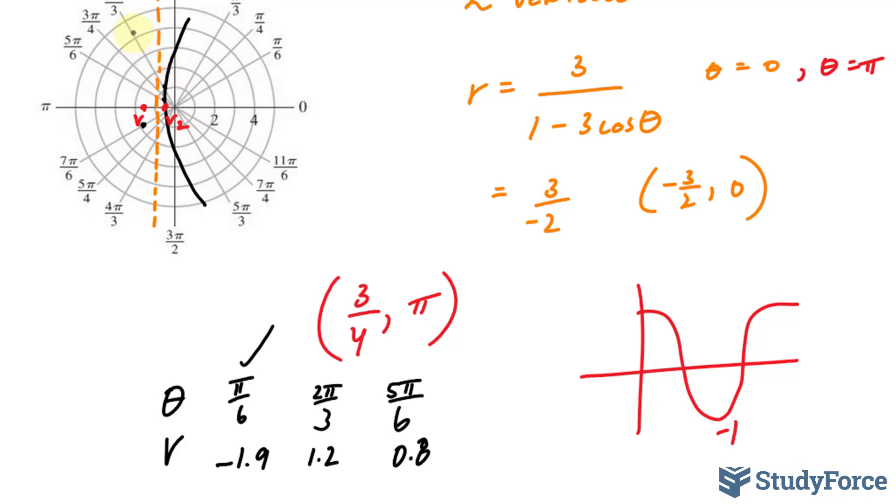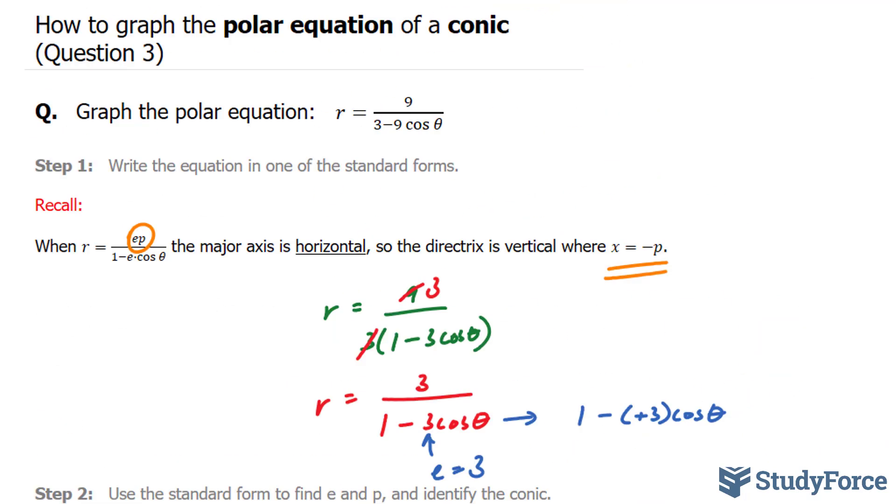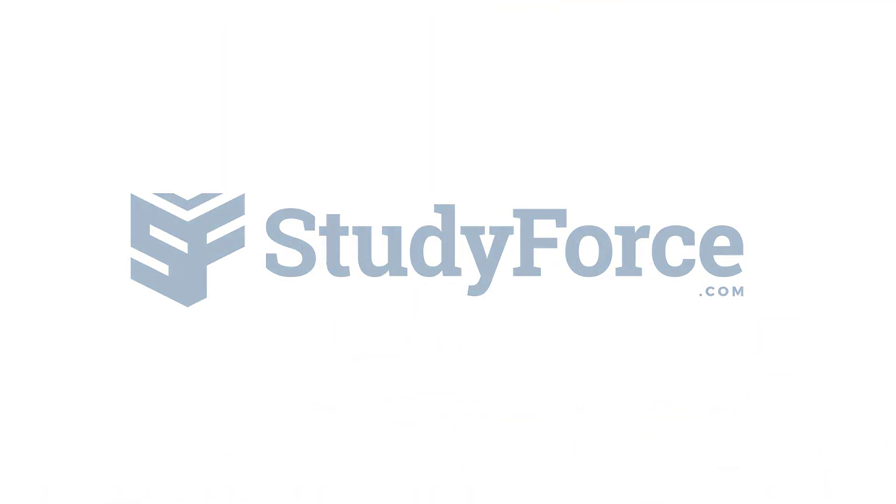And you can do your best to make it symmetrical. And there you have it. That is how to graph the polar equation of a conic.